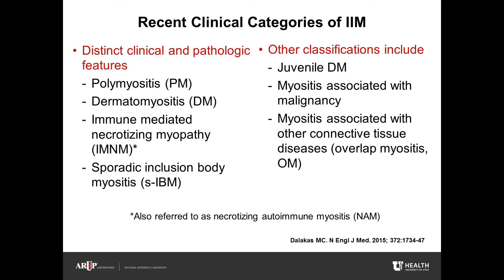The first diagnostic criteria by Bohan and Peter in 1975 characterized patients with myositis in three major discrete groups: polymyositis, dermatomyositis, and sporadic inclusion myositis based on clinical and histopathological features. Discovery of specific autoantibodies associated with distinct clinical pathological phenotypes has led to stratification of myositis into more categories, notably immune-mediated necrotizing myopathy, distinctions between childhood and other onset, the presence or absence of malignancy, as well as associations with other connective tissue diseases referred to as overlap syndrome. Thus, the identification of the correct subtype is fundamental because each subtype has a different prognosis and responds to therapies.